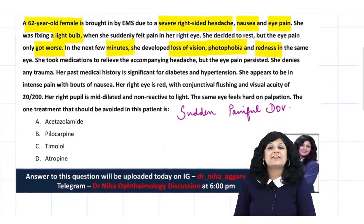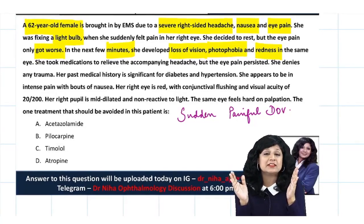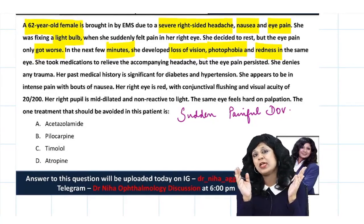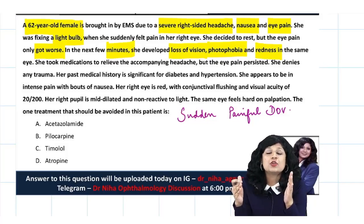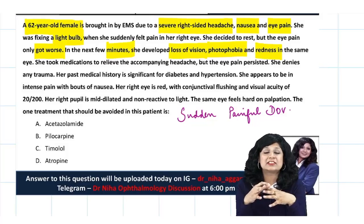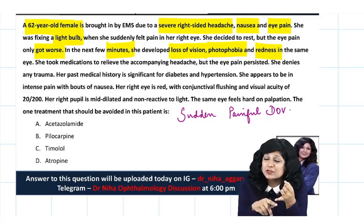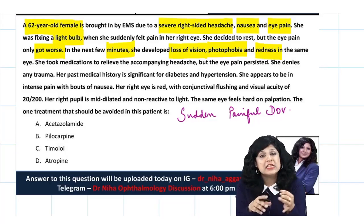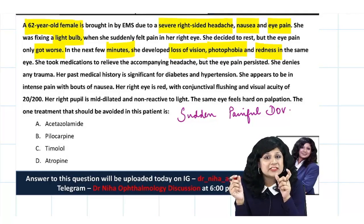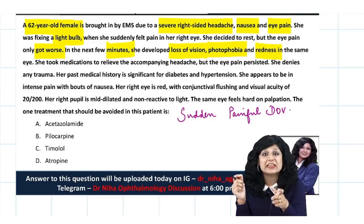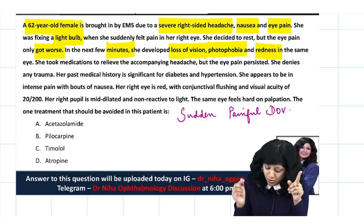In every case, I try to tell you from the start how to approach and proceed toward a diagnosis. Because every time you get an ophthalmology case, the common starting point is whether there is sudden painless loss of vision, sudden painful, or gradual painless — something like that. This question is also starting with sudden painful diminution of vision.